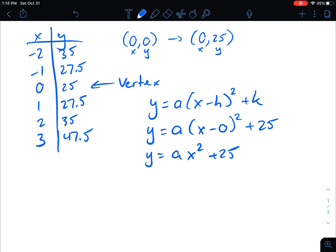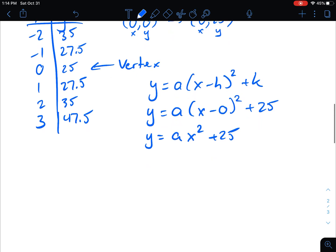Now again, to get my stretch factor, my a value, what I have to use is any known point. The point I'm going to use that looks the easiest to me would be 2, 35. I'm going to use that one only because there's no decimals. It looks nice and simple. The 2 is my x, 35 is my y. So let's plug it in. 35 equals a bracket x is 2, 2 squared plus 25.